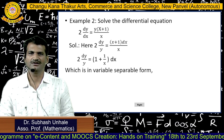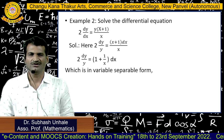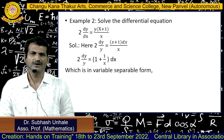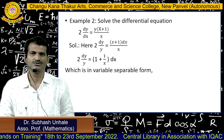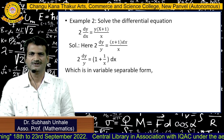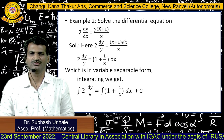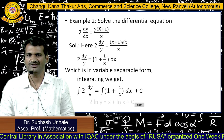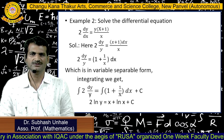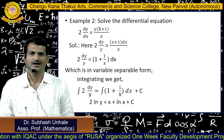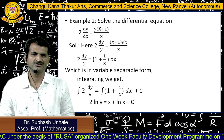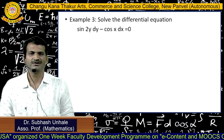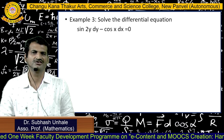For the second example, solve 2·(dy/dx) = y·(x+1)/x. Separating variables: 2·dy/y = (1 + 1/x)·dx. Integrating both sides: 2·ln y = x + ln x + c, which is the general solution. For the third example, sin2y·dy − cosx·dx = 0, we separate to get sin2y·dy = cosx·dx.